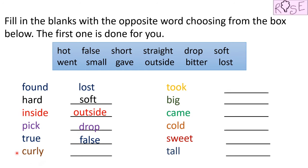Curly. Seema has curly hair. So what will be the opposite of curly? It will be straight. And where is straight written in the box? Here it is.